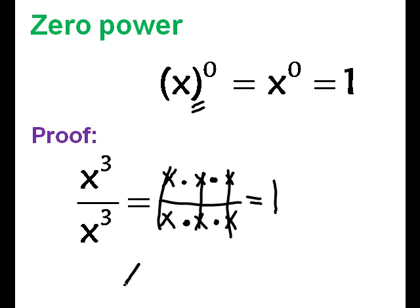Remember, when we divide, we subtract their exponents. x to the 3 minus 3 is x to the 0. So I just proved to you that x to the 0 equals 1.